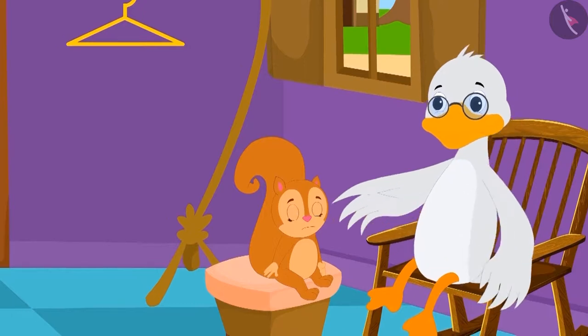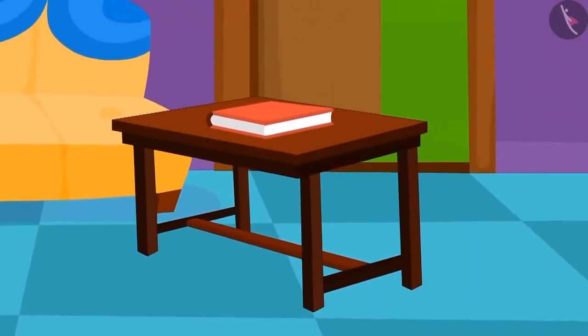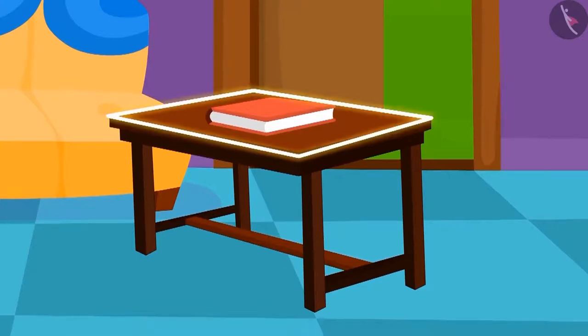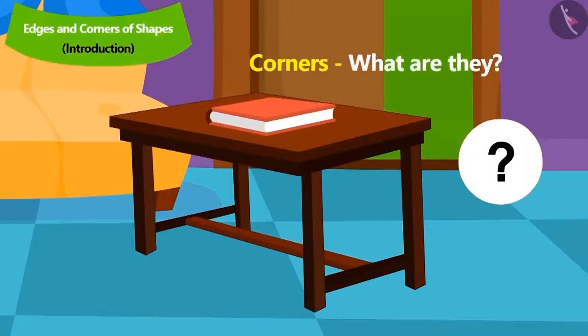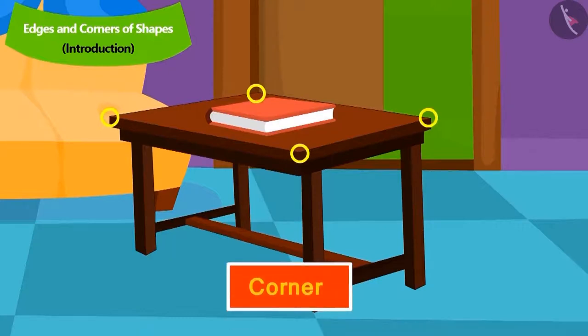Uncle showed the table at his place. See that outside the surface of this table, four lines are forming the boundary of the table. We call them edges. And do you know what is meant by corners where two edges meet? We call that point a corner.